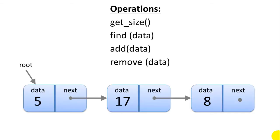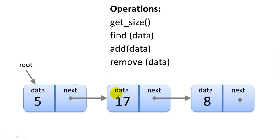For find data, we're going to start at the root. We'll compare the value that we're searching for — let's say we're trying to find 17 — to the data in the first node. They're not equal, so we'll go to the next node. We've found our 17, so we'll return 17. Or if we're looking for a value that's not in the list, we'll continue searching until we get to the end of the list and then we'll return null or false.